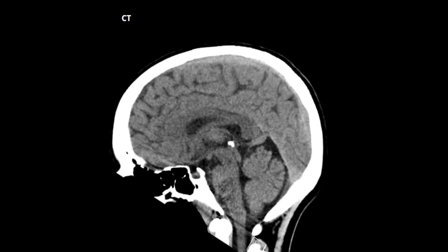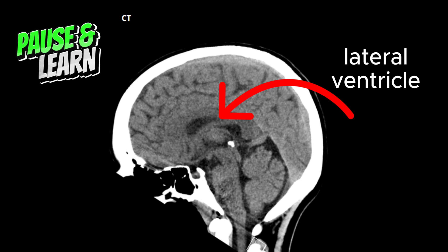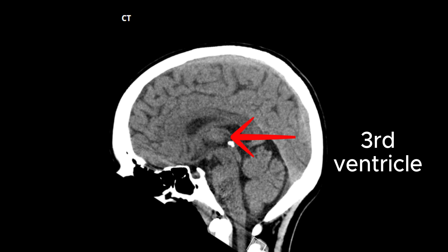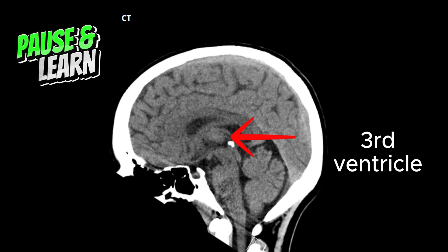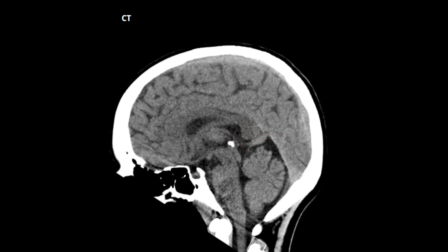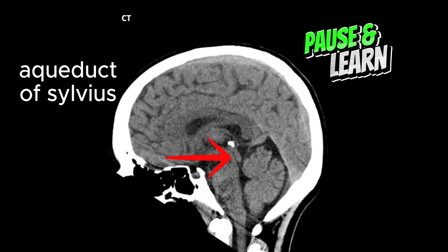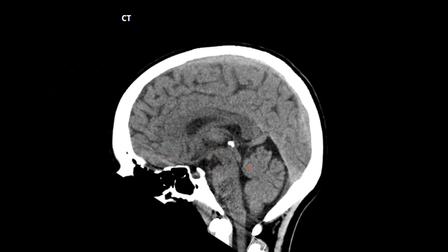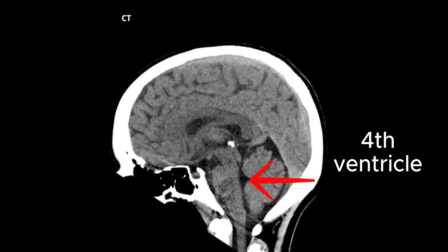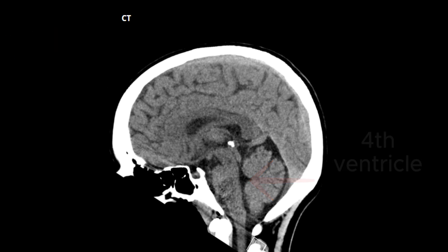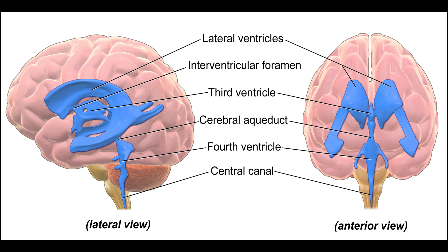Now let's have a look at the ventricular system on sagittal sections. This here is the lateral ventricle. This is the part of the third ventricle. This narrow channel here is the aqueduct of Sylvius, which acts as a communication between the third ventricle and the triangular-shaped fourth ventricle, which lies in the posterior fossa. Here is a simplified diagram.